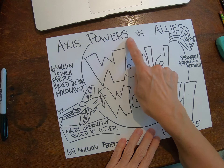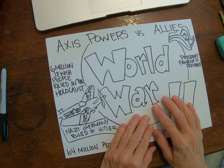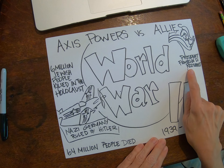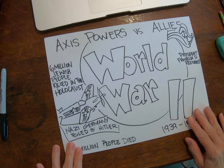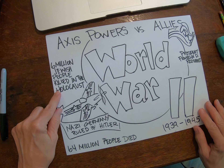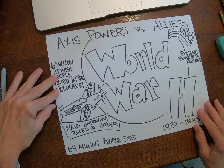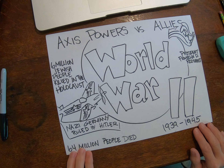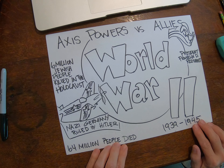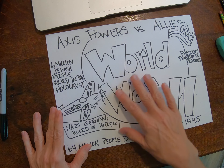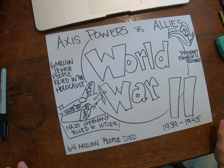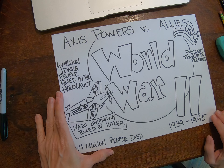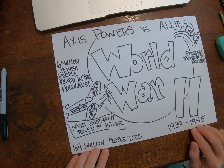The USA was one of the Allied countries. President Roosevelt was the President of the United States during that time. Six million Jewish people were killed in the Holocaust during World War II. Nazi Germany was ruled by Hitler. 64 million people died in World War II — more than the entire population of England — and it lasted from 1939 to 1945.